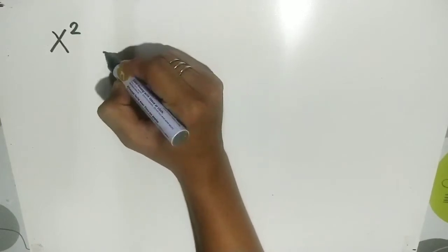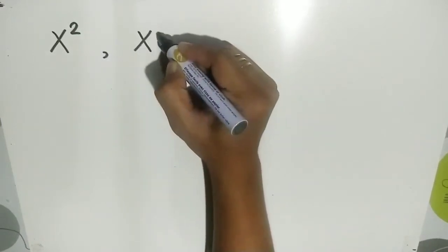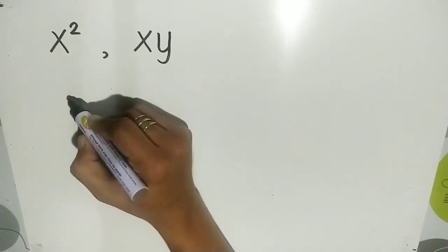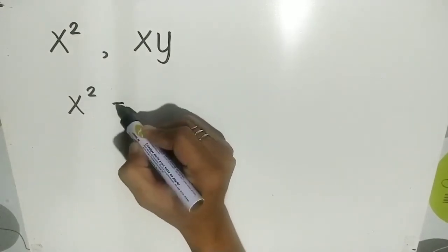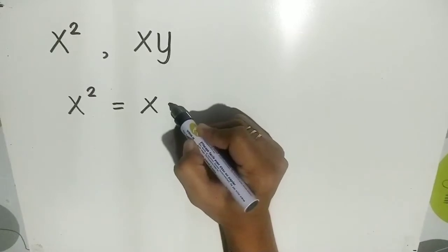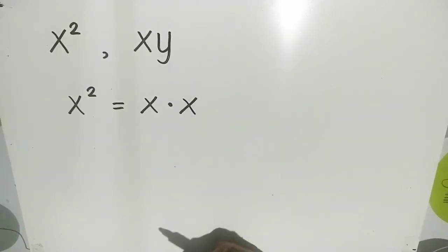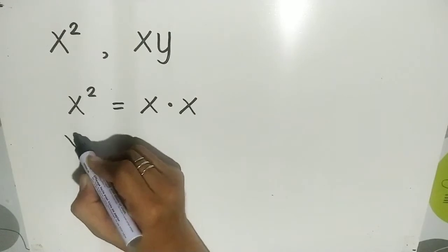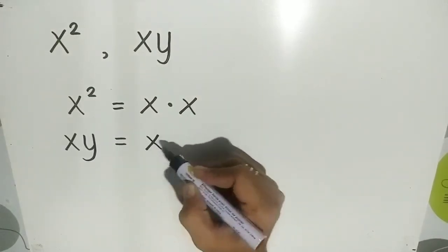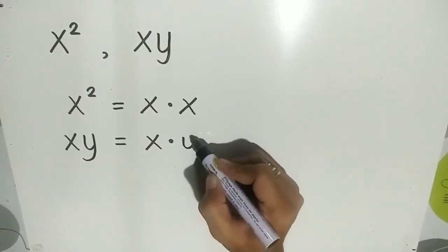We have 2 monomials: x squared and x y, and we are going to find the LCM of these monomials. To find the LCM, we are going to factor x squared. The factors of x squared are x and x. We will also factor x y, which is x times y.